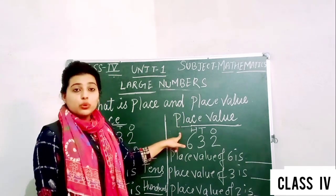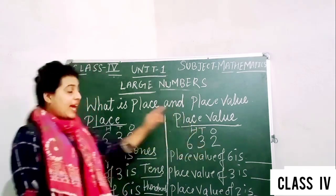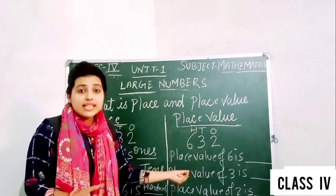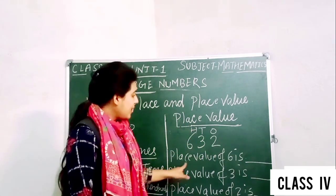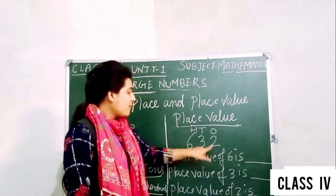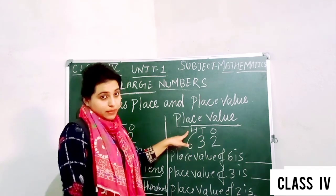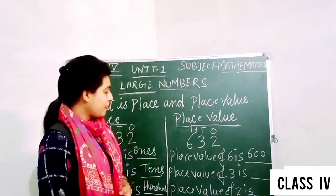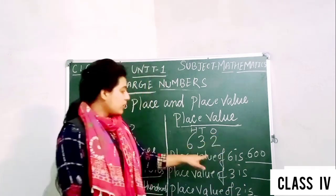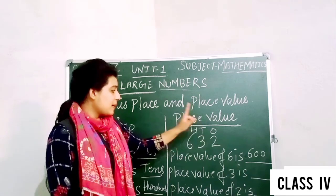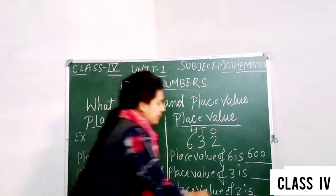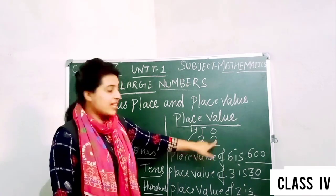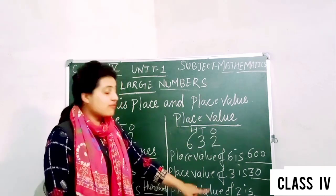Now we have to write the place value of these numbers. The place of 6 is hundreds, so the place value of 6 is 6 into 100, which is 600. The place value of 3 is 3 into 10, that is 30. And the place value of 2 is 2 into 1, so the place value of 2 is 2.